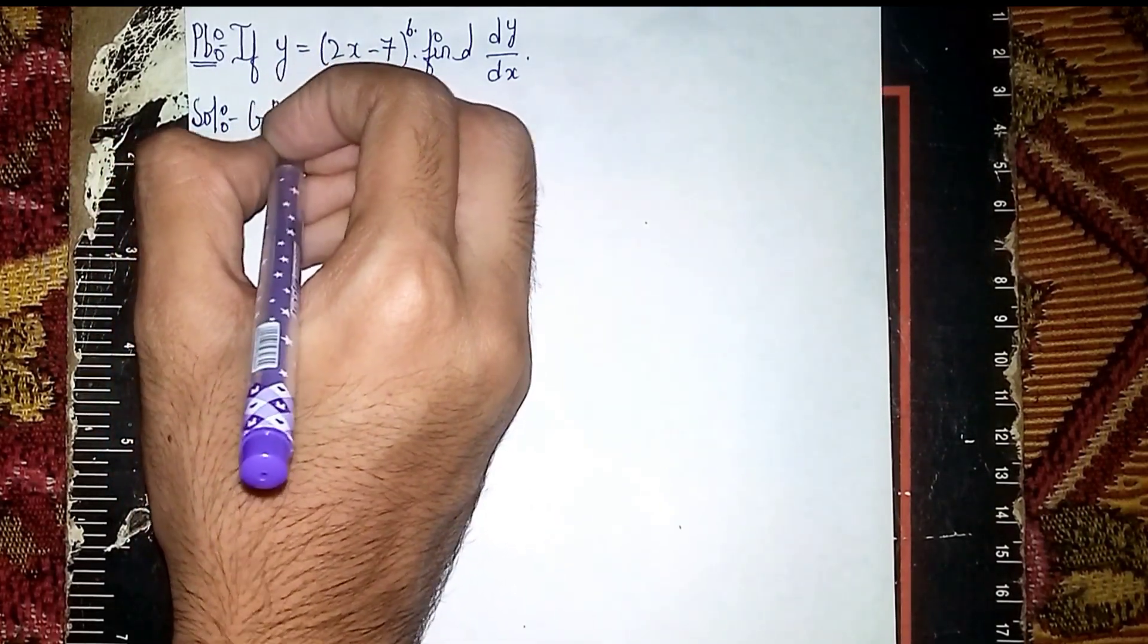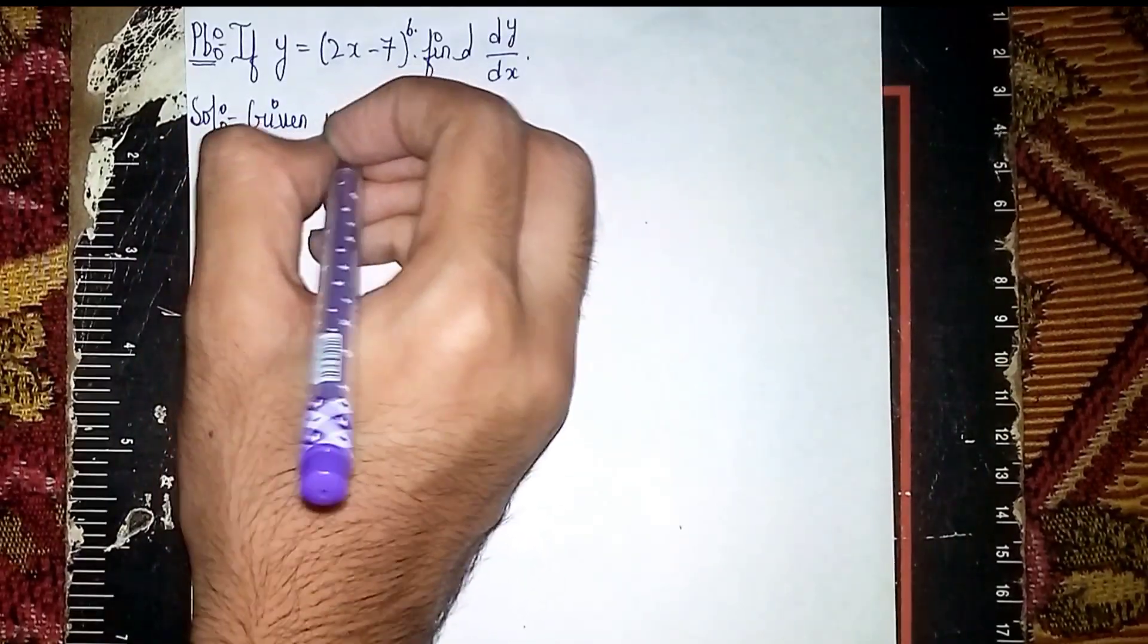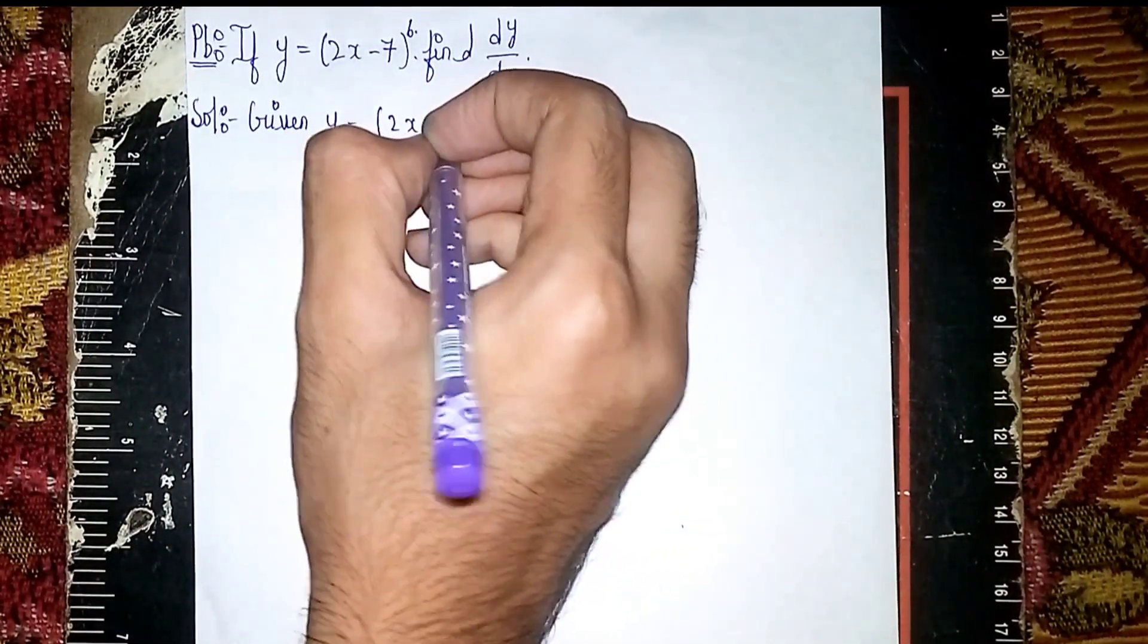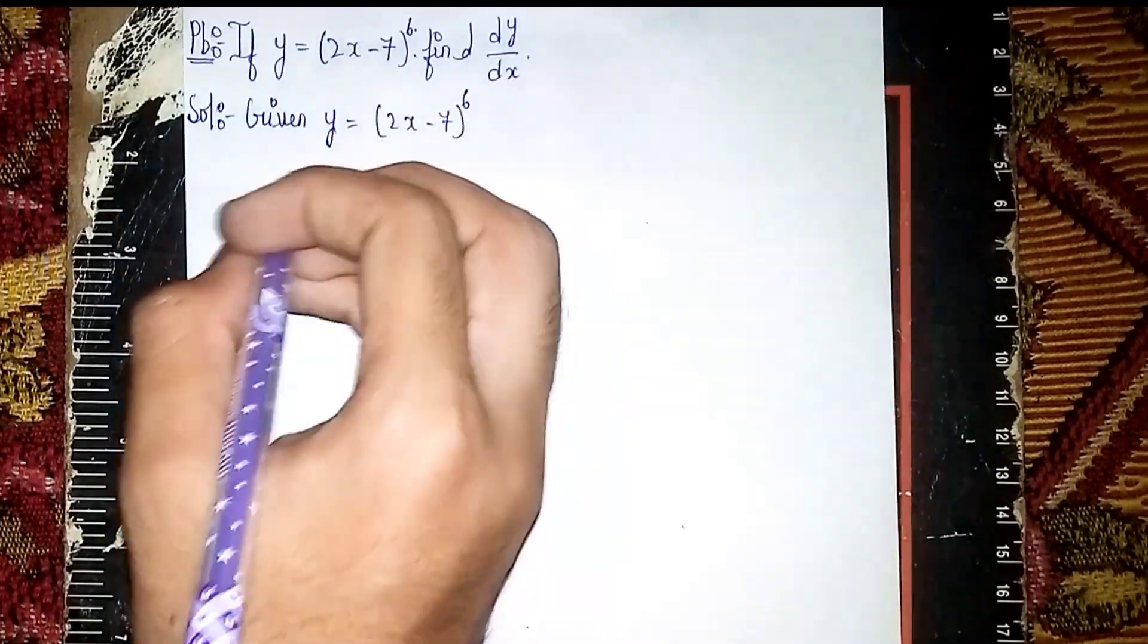Given: y is equal to (2x - 7)^6. Now let's write another statement.